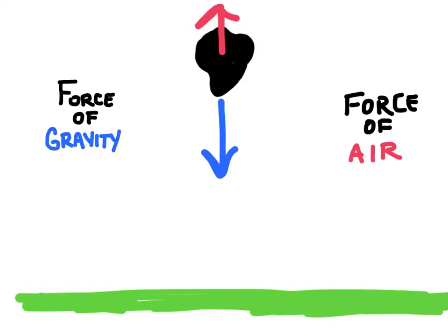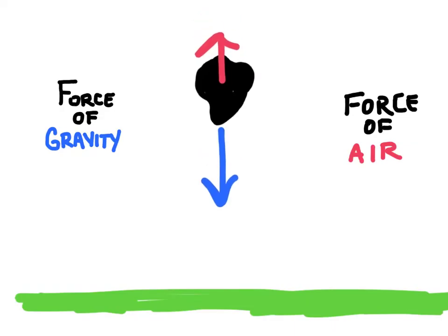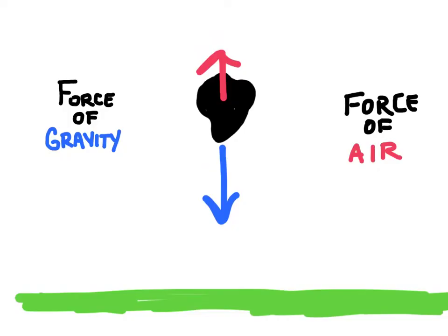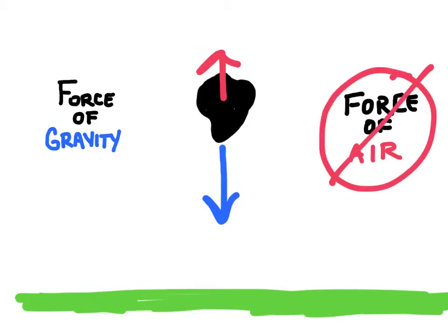The object will begin moving downwards and oftentimes what we do is we ignore air resistance to make our problems a lot simpler. So for our purposes we're going to forget about air resistance, and the only force actually acting on our free falling object is going to be the force of gravity.